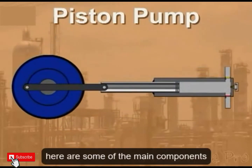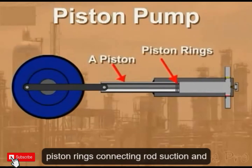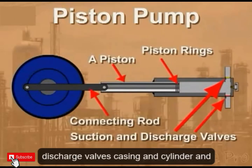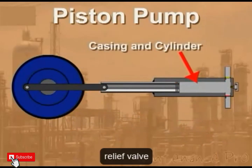Here are some of the main components that make up a piston pump: a piston, piston rings, connecting rod, suction and discharge valves, casing and cylinder, and relief valve.